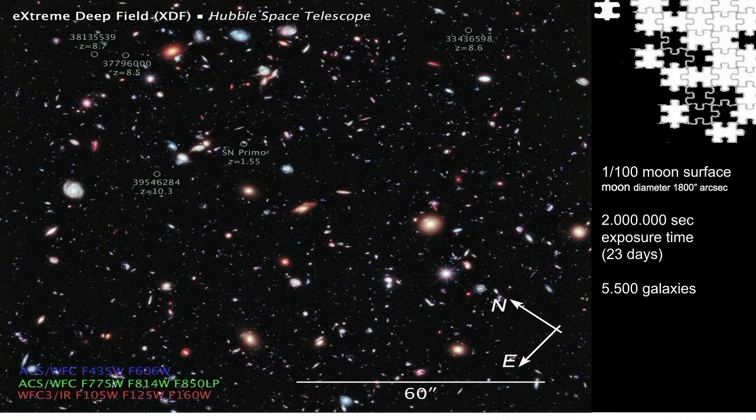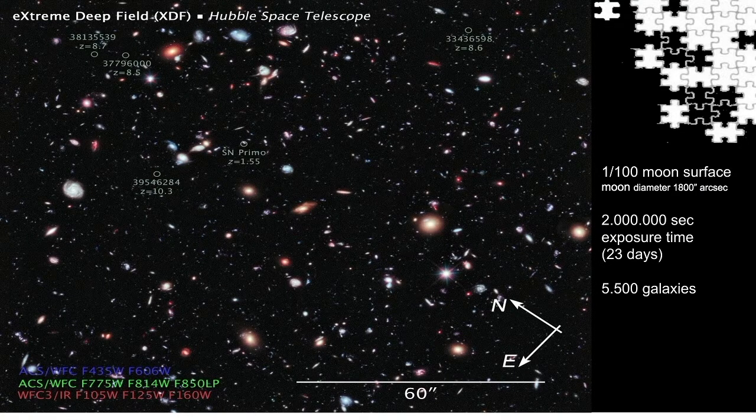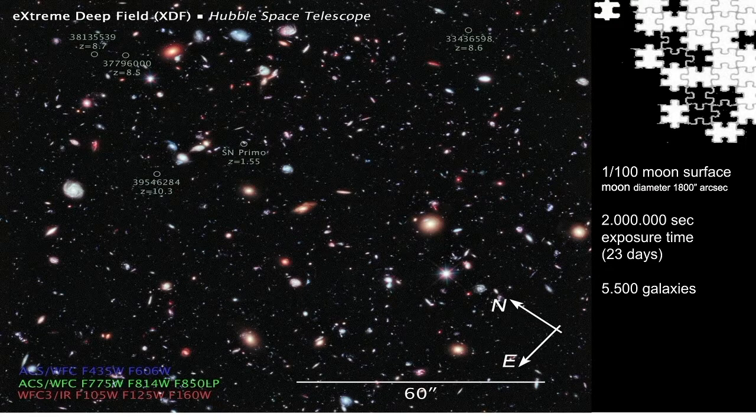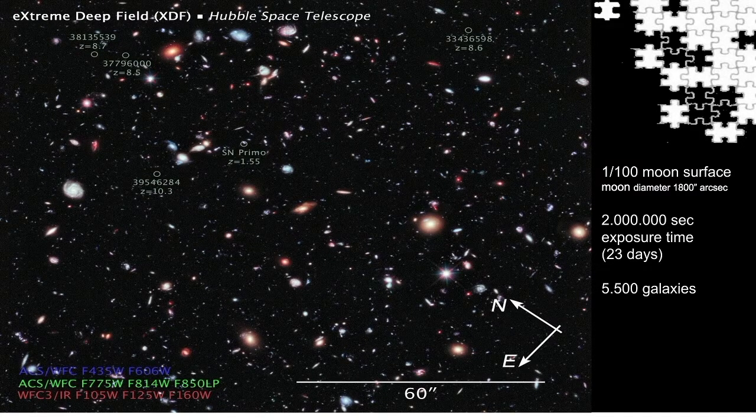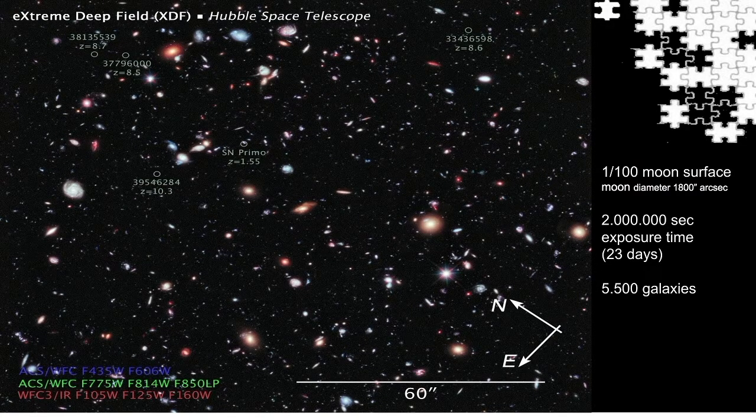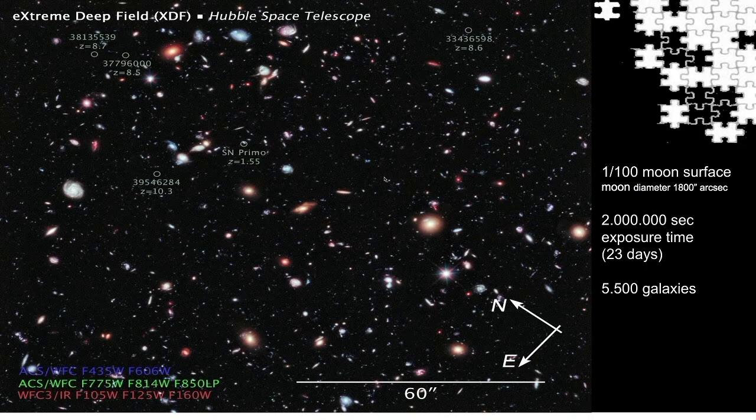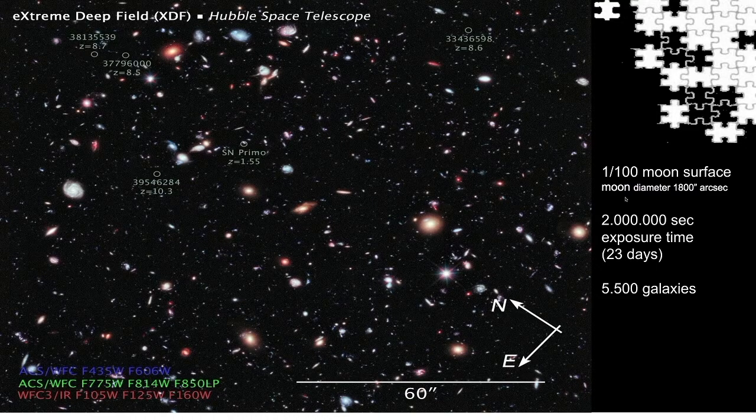Point at the full moon with your index finger, and the moon will disappear behind it easily. The moon is about half a degree wide. Now divide the surface of the moon in 100 equal parts. Only one part is the view area of the Hubble Space Telescope.